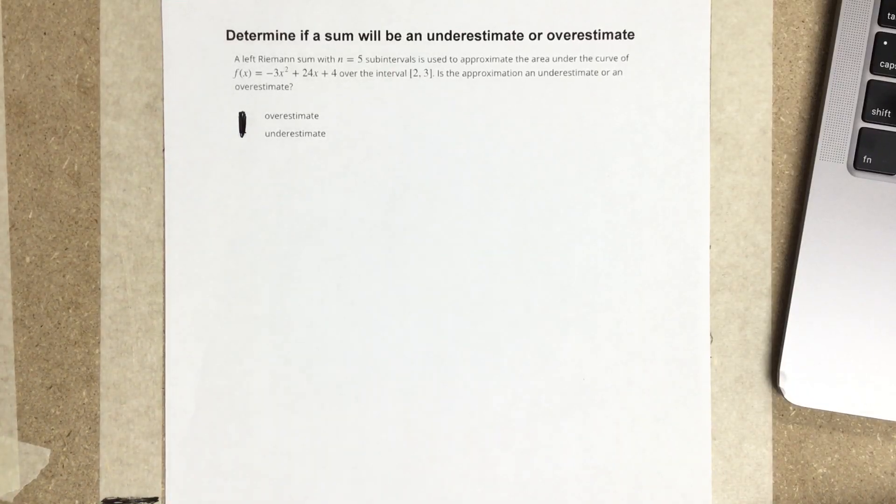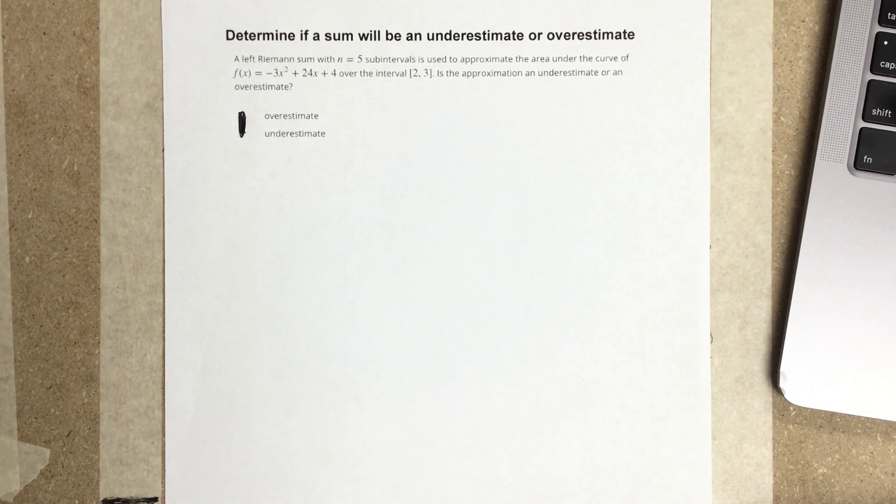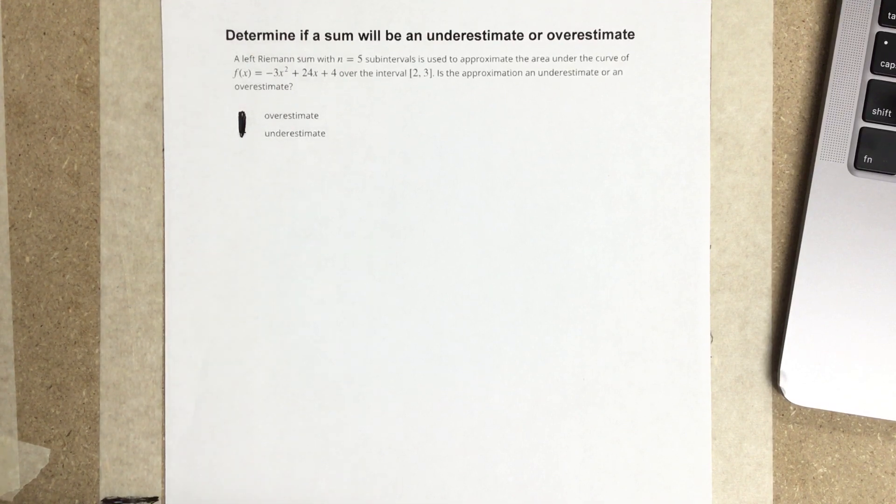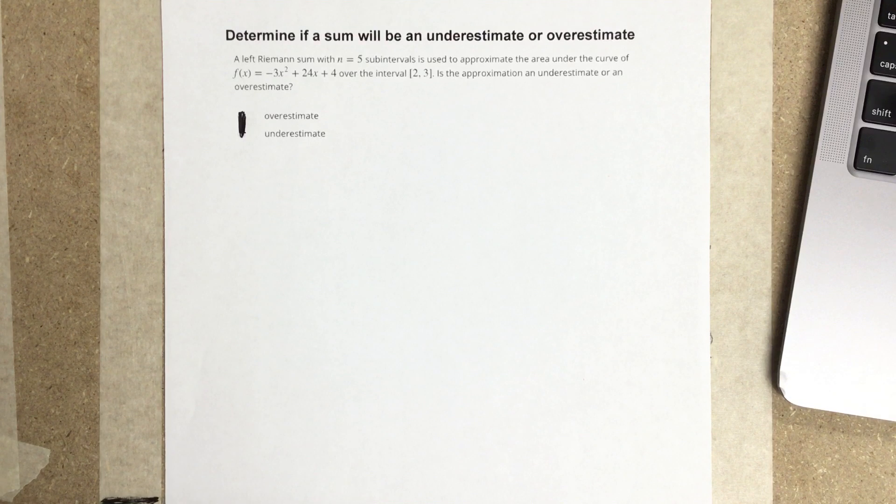In this video, we're going to determine if a sum will be an underestimate or overestimate. A left Riemann sum with n equal 5 subintervals is used to approximate the area under the curve of f(x) = -3x² + 24x + 4 over the interval 2 to 3. Is the approximation an underestimate or an overestimate?